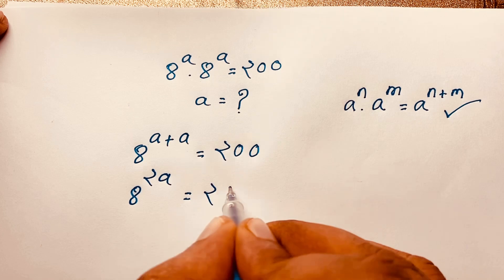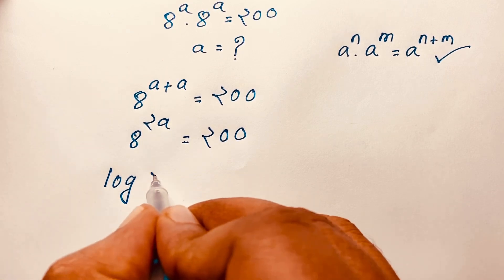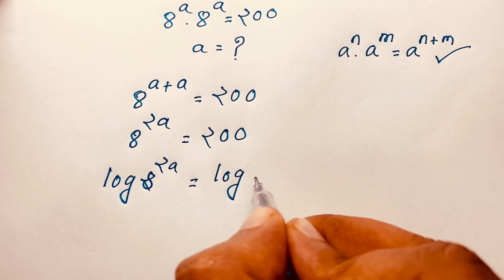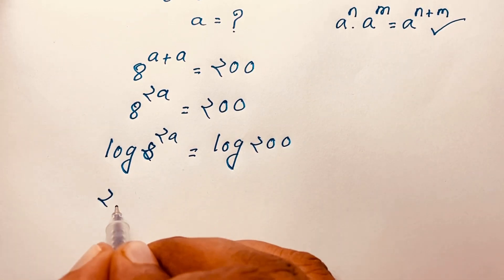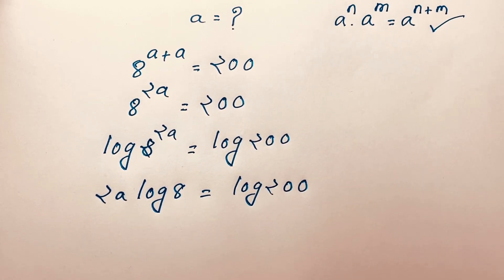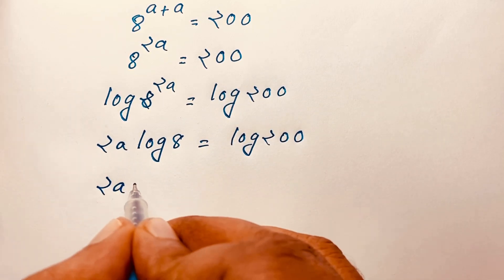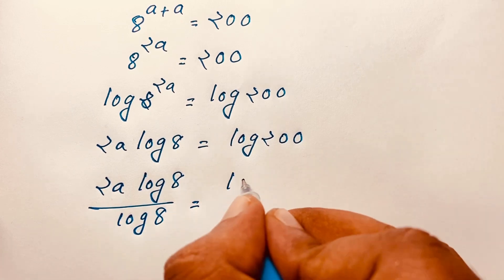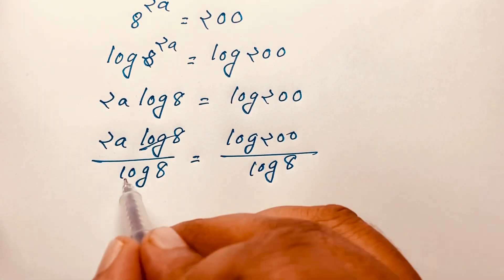Now 8^(2a) is equal to 200. I apply log to both sides: log(8^(2a)) equals log(200). According to logarithm rules, the exponent moves to the front, so 2a·log8 equals log200. Now I divide both sides by log8, giving 2a·log8 / log8 equals log200 / log8.